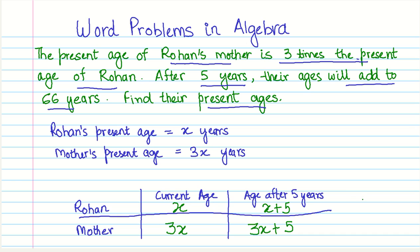Now, we are given sum. So we are not given a sum for their current ages, but we are given that this sum, the sum of their ages after five years, that is, x plus 5 and 3x plus 5, the sum of these two ages. And that sum is given to be 66 years, right? 66 years. So I will just continue this further.